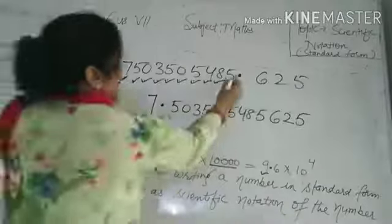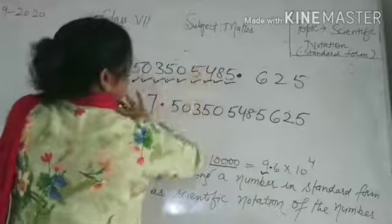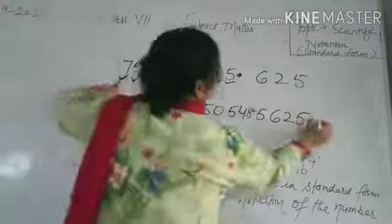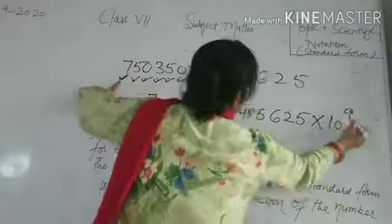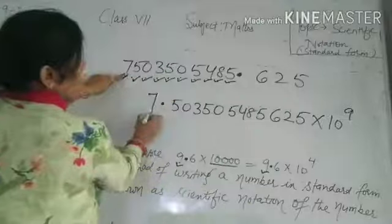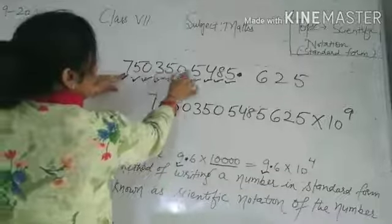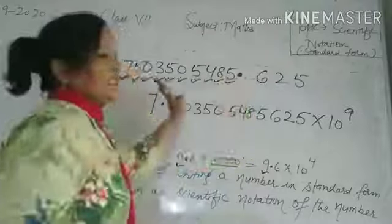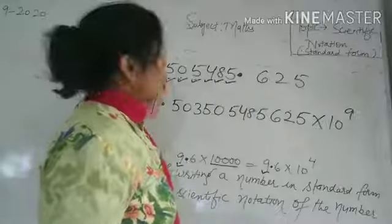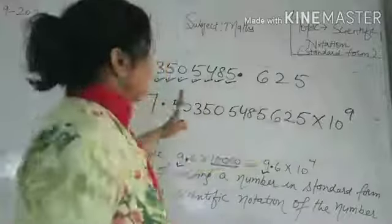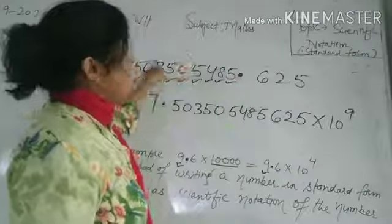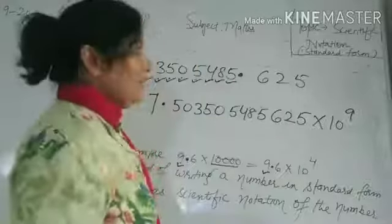The decimal has been shifted. How many digits were shifted? Counting 1 through 9 — nine digits. So 10 raised to power 9 will be used, because however many places we move the decimal, that becomes the power of 10. The answer is 10 raised to power 9.